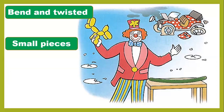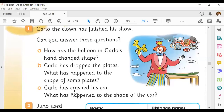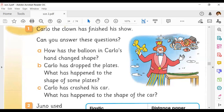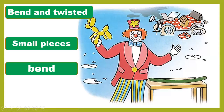Part B: Carlo has crashed his car. Look at this car — it's crashed. What has happened to the shape of the car? As you can see, the car is shaped like a bent. Carlo's car has been bent. You have to write your answers in your learner's book.